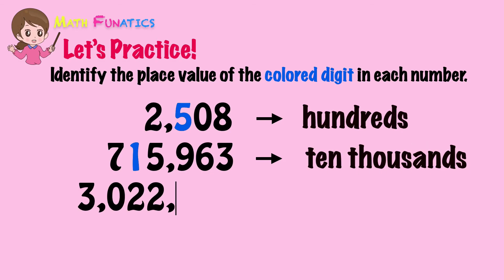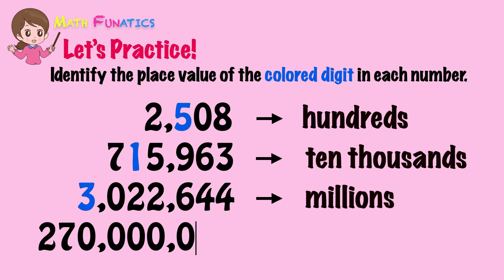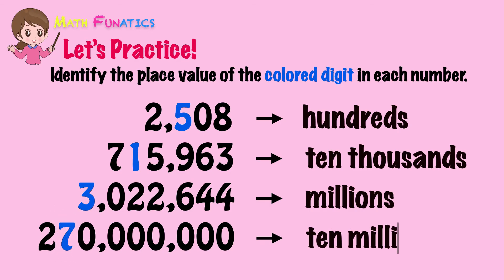Next, 3 is the colored digit — it is in the millions place. And in the last example, 7 is the colored digit — what is its place value? Correct, it's ten-millions.